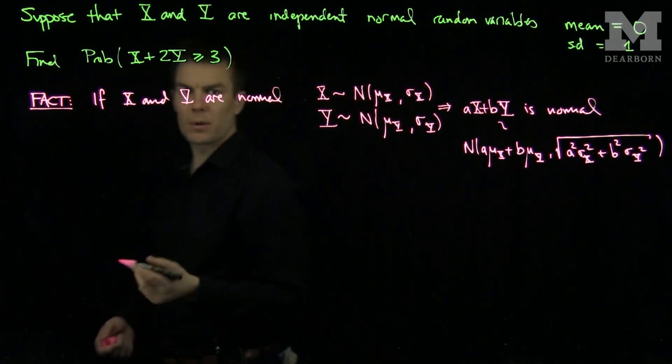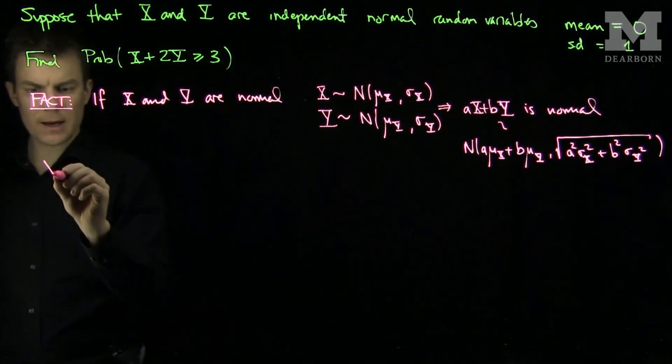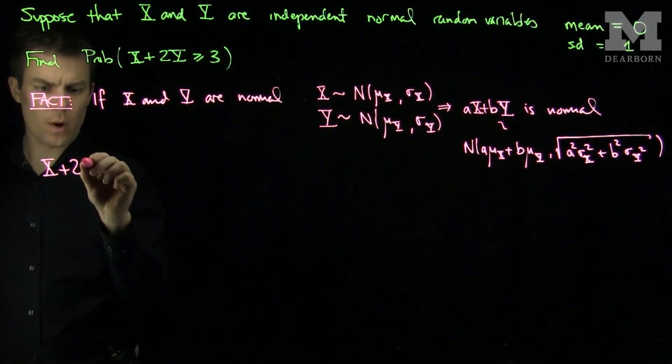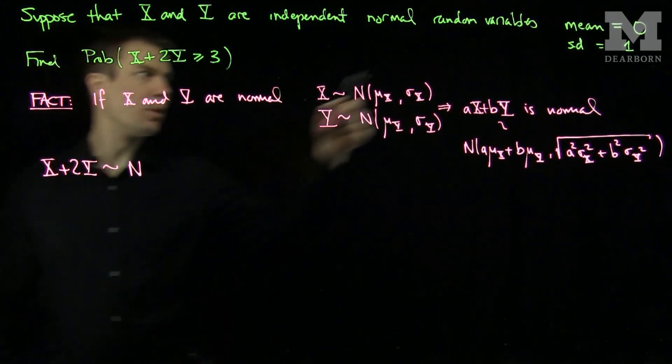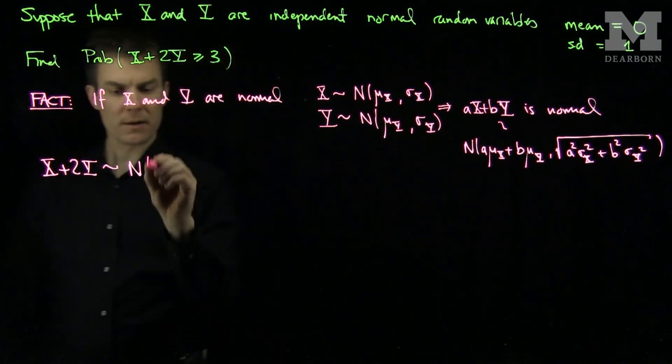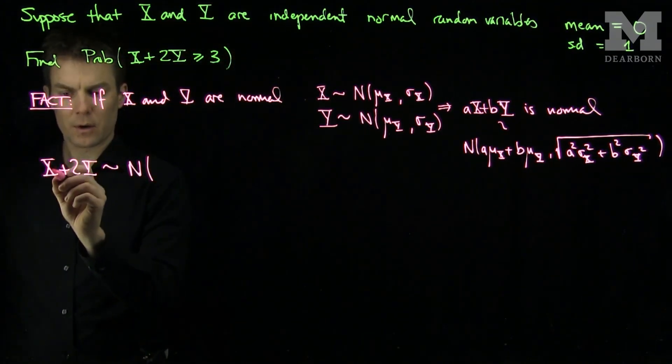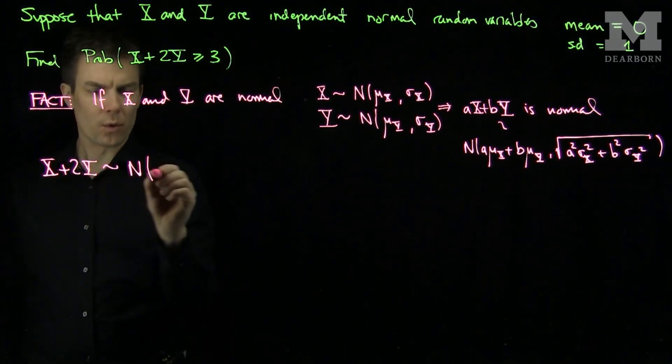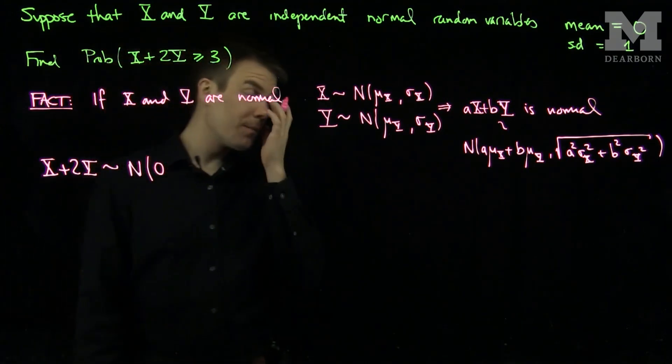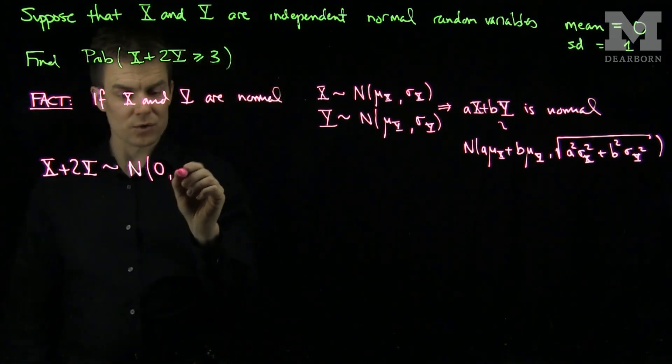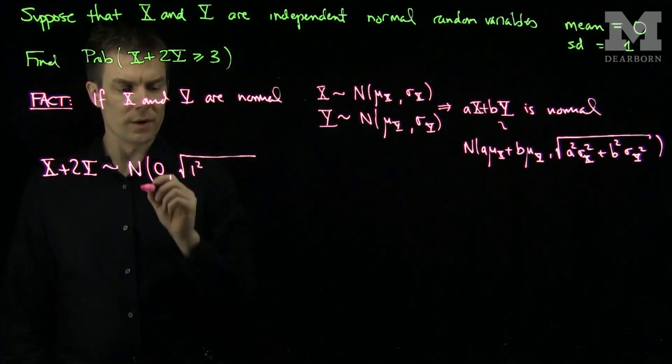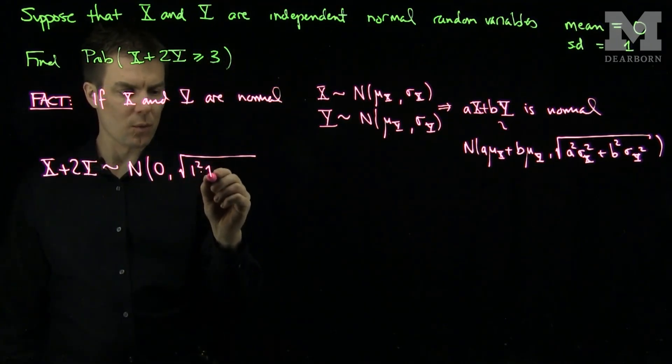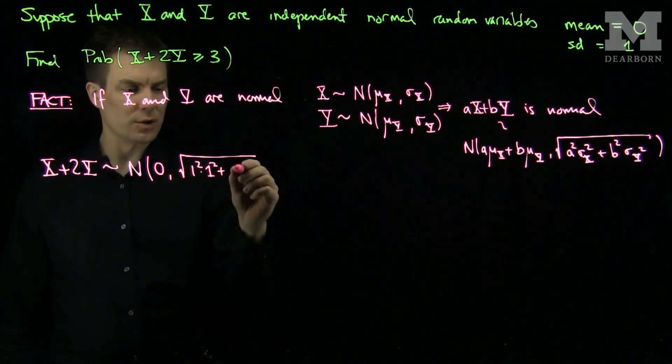So in our problem, note that X plus 2Y will be normally distributed. Since both of the means are equal to 0, the mean of the sum will give me a mean of 0. And they both have standard deviations 1, so we see the standard deviation of this sum will be 1² times 1² plus 2² times 1².